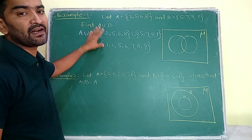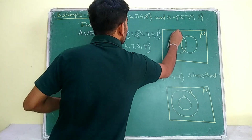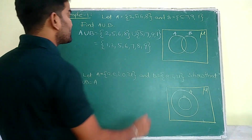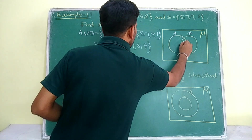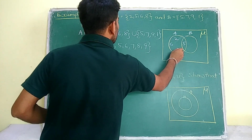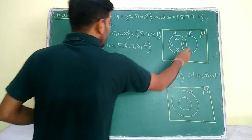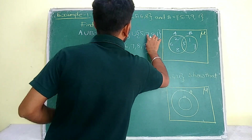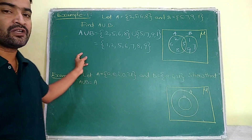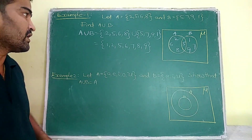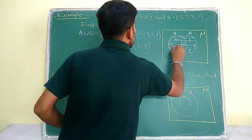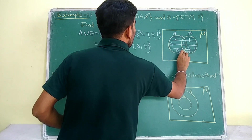If you ask us to draw the Venn diagram, firstly we have to take two sets A and B, then fill the common elements in the common place. Here the common element is only 5. In A, the elements left are 2, 6, 8. In B, the elements left are 1, 7, 9. A union B means all the elements of A and B together. So this is our A union B.